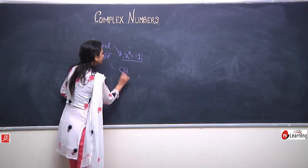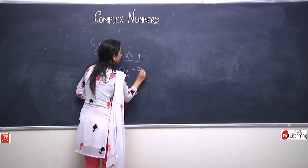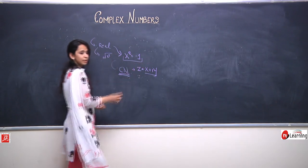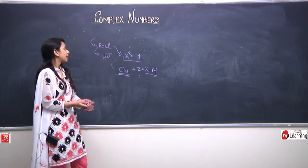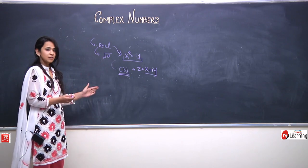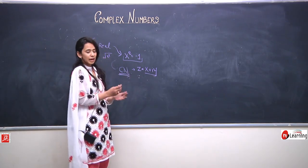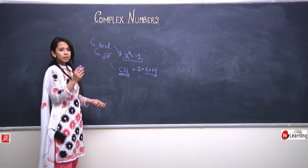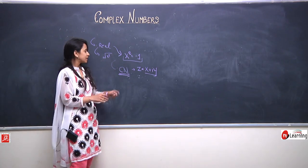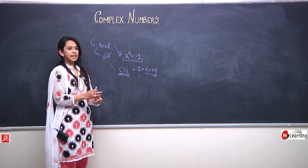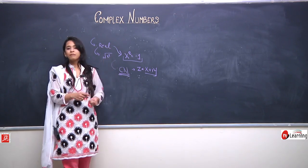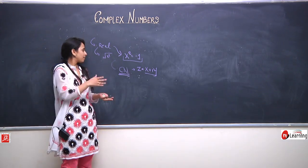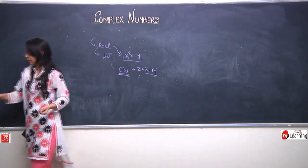We said that any number z of the form x plus iota y is a complex number. This defines the set of complex numbers. In order to define a complete system, we also defined the structure of the complex number z equals x plus iota y. On the basis of this structure, we found that any complex number z can be represented on a 2D plane, which we called the Argand plane, and the representation is called an Argand diagram.